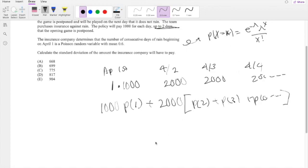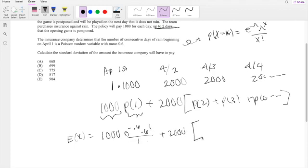And we're first trying to find expectation of X. So we can just multiply the probability that it's going to happen times the value that's going to happen. So it's going to be 1,000 times the probability of 1, which is e to the negative 0.6 times 0.6 to the 1 over 1 factorial, plus 2,000 times the probability for everything else. And we know all probability has to add up to 1.